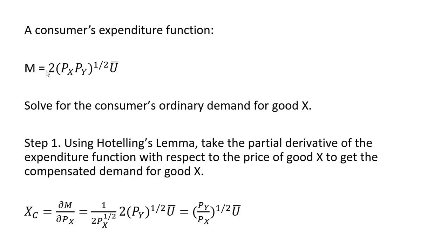I'm going to bring the 1/2 down in front, so that's why I have 1 divided by 2 here. Since the price of good x is raised to the 1/2 power in the exponent, we're now going to have the price of good x raised to the 1/2 minus 1, or the price of good x raised to the minus 1/2 power. I'm just going to bring that down into the denominator, so after taking the partial derivative of the price of good x term, I'll have that down here in the denominator.